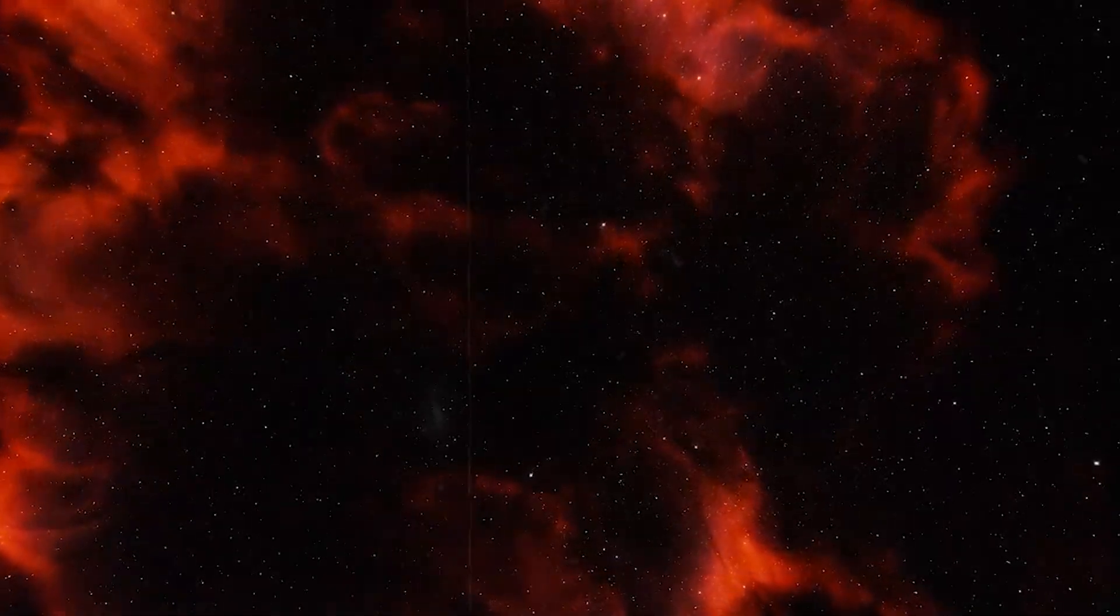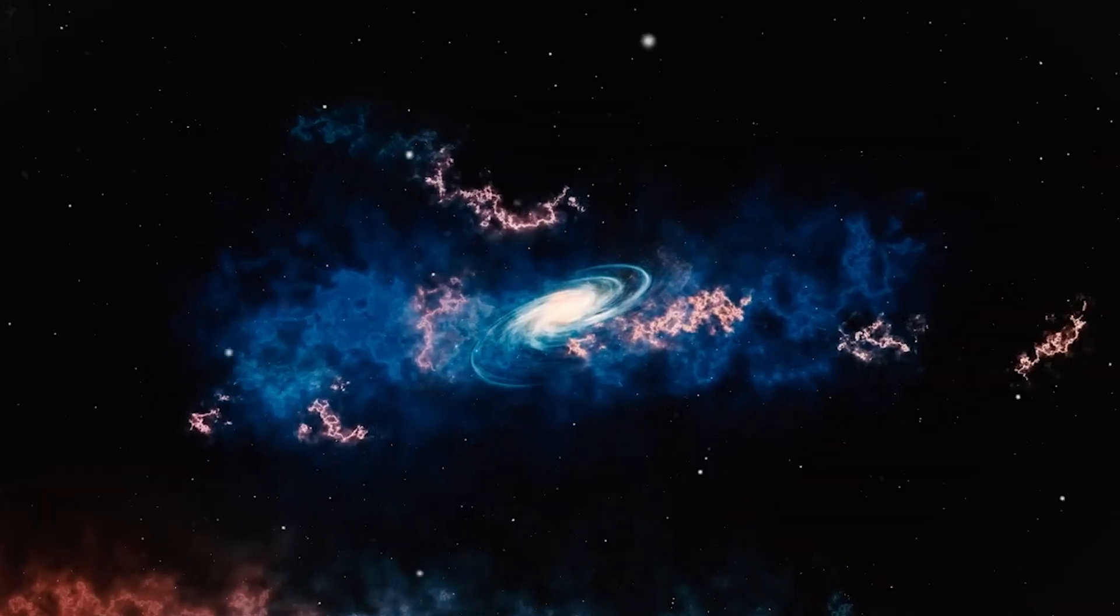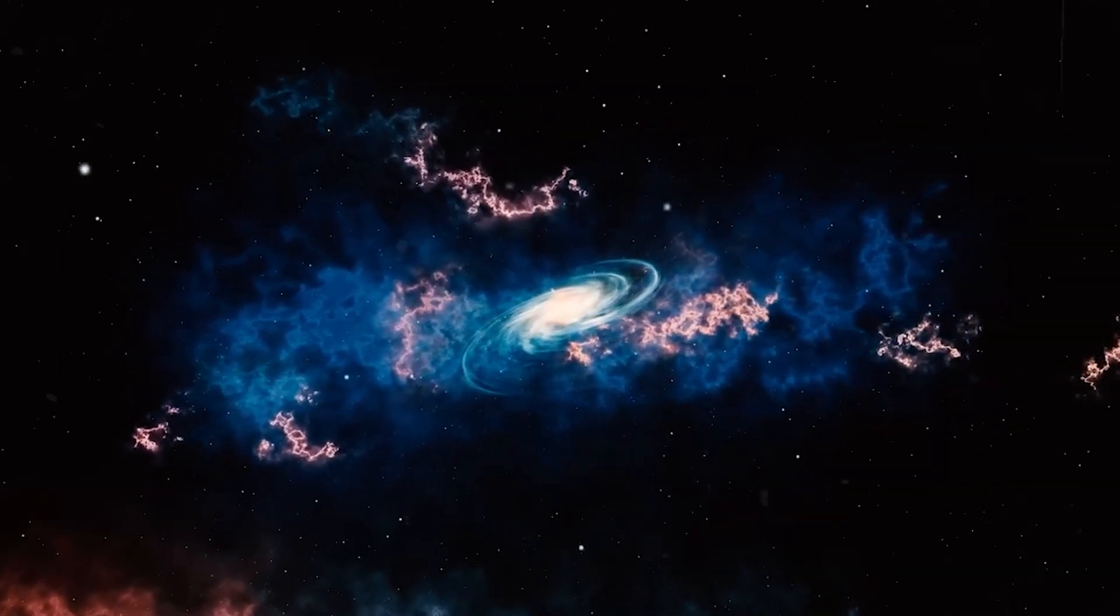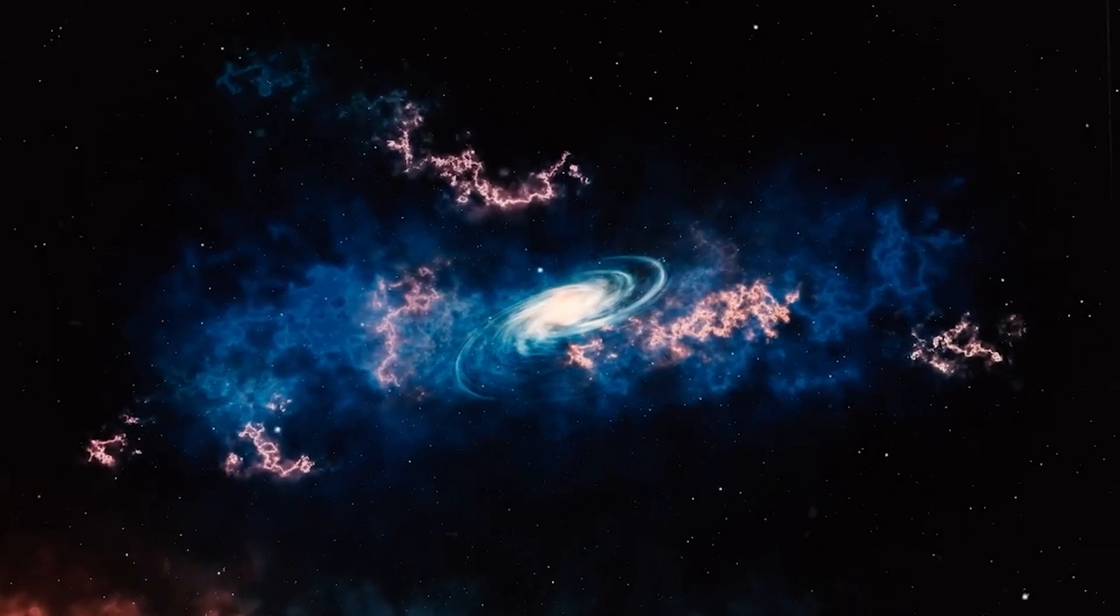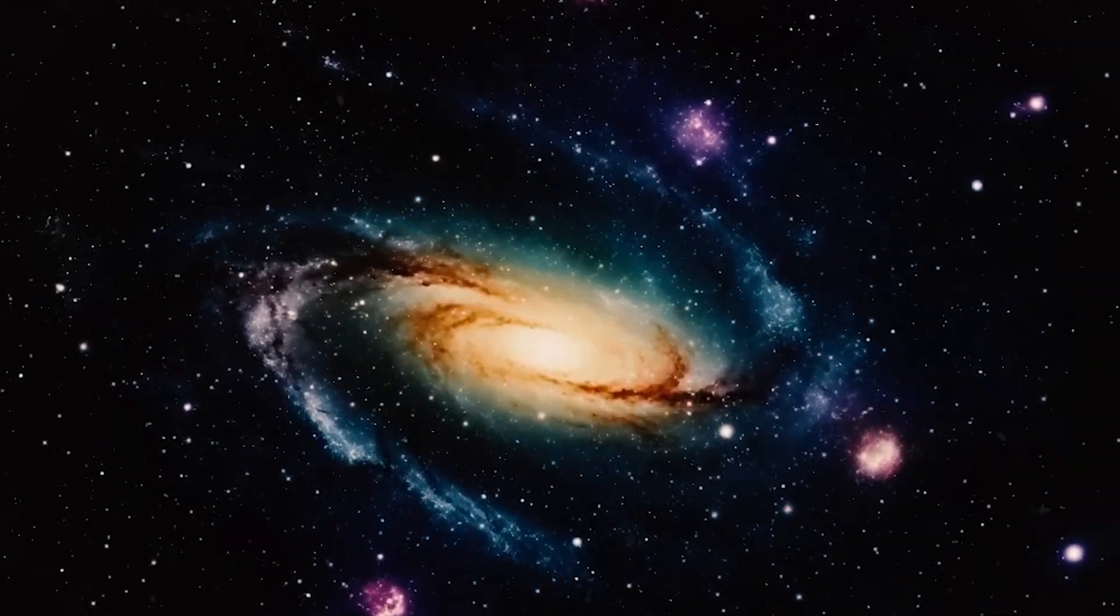For about 15 years, scientists have speculated that dark stars were among the first stars our universe formed. Only, scientists estimated the timing of the first stellar revolution to be 700 million years after the Big Bang. Now, entire galaxies are appearing that existed 300 million years after the Big Bang. If the existence of dark stars should prove to be true, we may find how galaxies could have already existed so early in the cosmos.